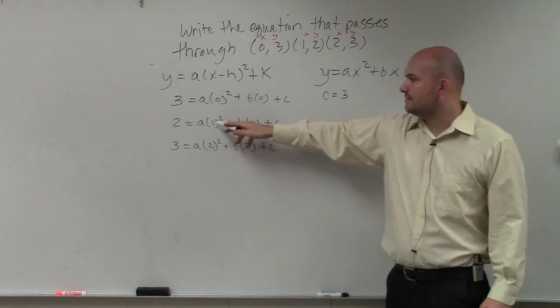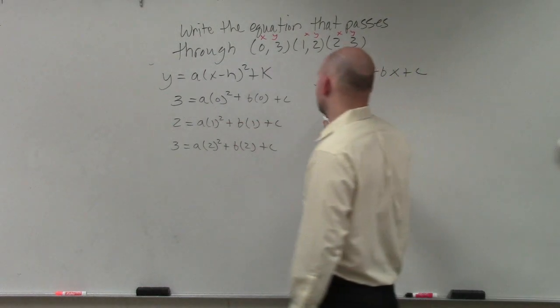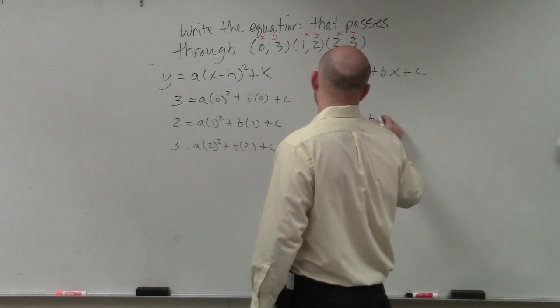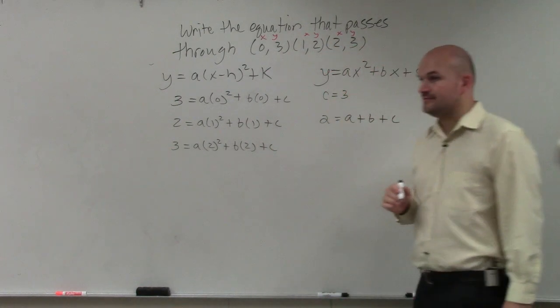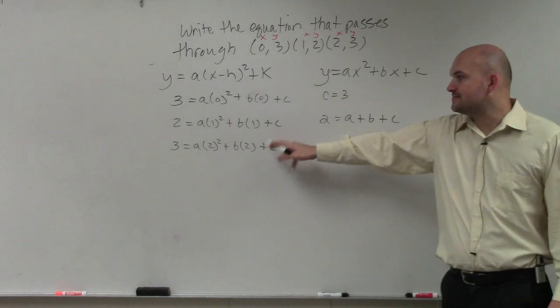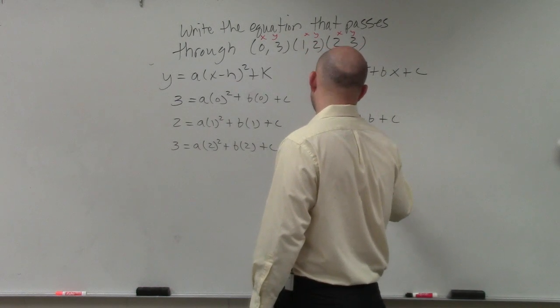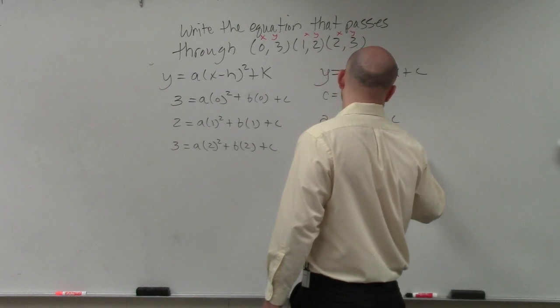Here, this goes ahead and simplifies to the equation 2 equals a plus b plus c. And then this one simplifies to 3 equals 4a plus 2b plus c.